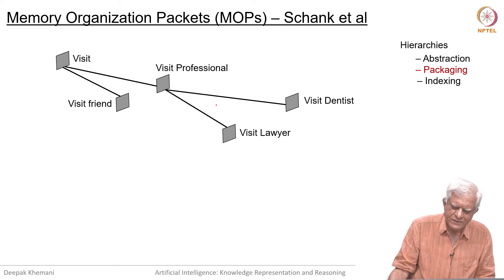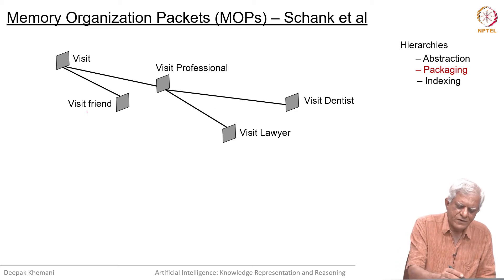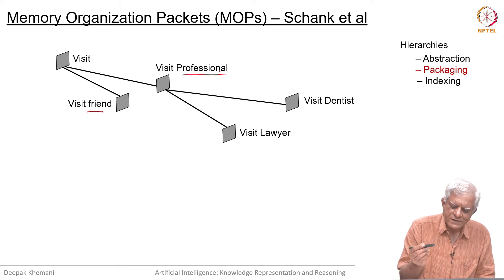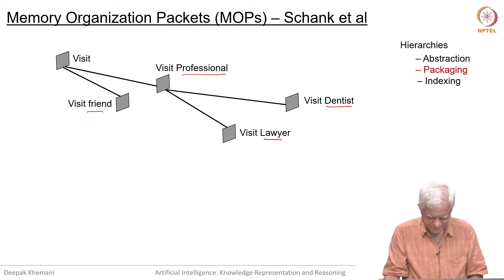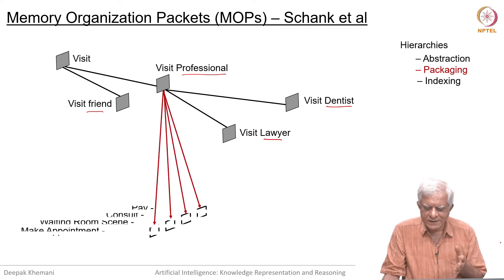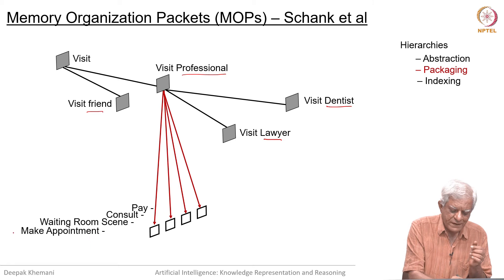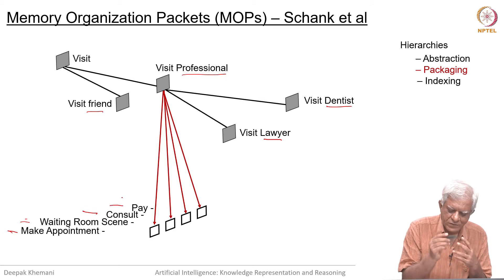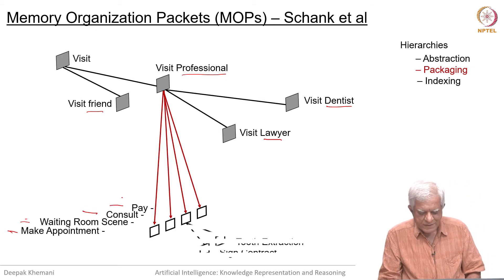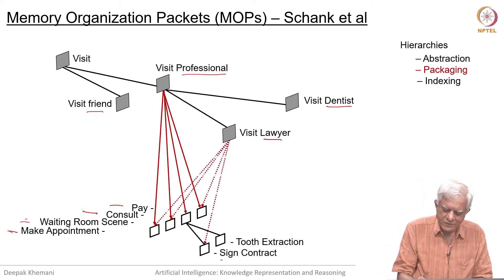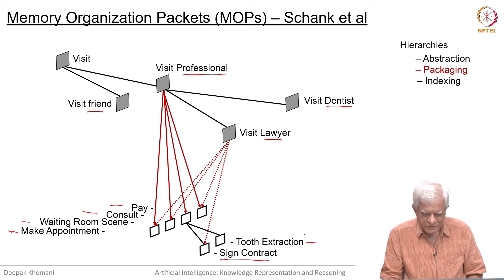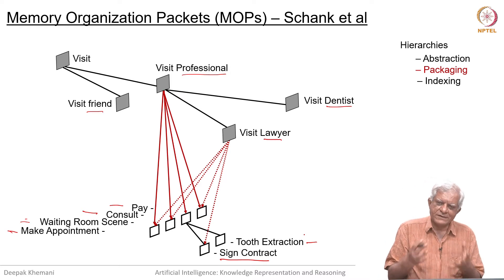For example, a script for visiting could be either for visiting a friend or visiting a professional. A professional, for example, could be a lawyer or a dentist. The aggregation hierarchy says a professional visit is made up of four parts: you first make an appointment, then you wait in the waiting room, then you do whatever consultation you are doing, then you pay and you are done. That could be specialized further — if you are going to a lawyer, maybe you sign a contract; if you are going to a dentist, maybe you have a tooth extraction. This was the idea of memory organization packets from the Yale school.